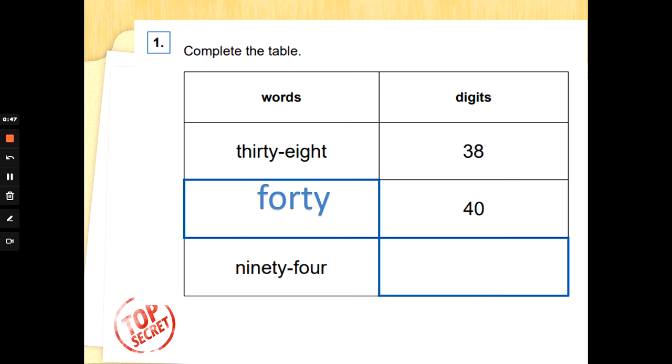Forty, there you go. Don't let that one catch you out: F-O-R-T-Y. Well done. Then the next number, we need to use our reading skills: 94, and we just need to pop the digits in the box to get that one done.